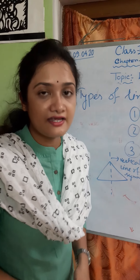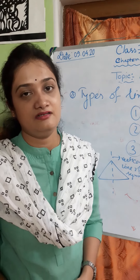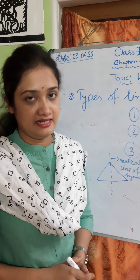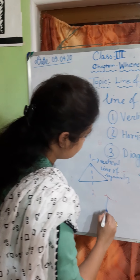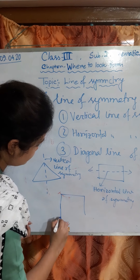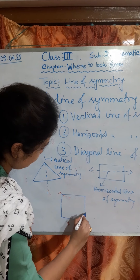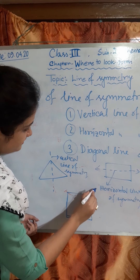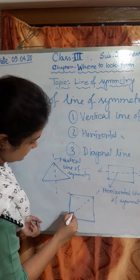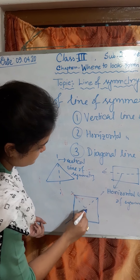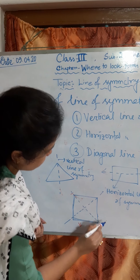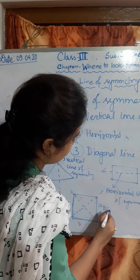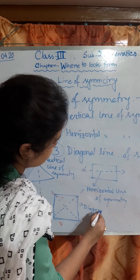Diagonal line of symmetry means lines which are slanting lines — they are called diagonal line of symmetry. For example, if I draw a square and draw a slanting line through it, then these lines are diagonal lines of symmetry.